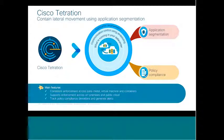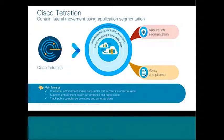Once policies are in place and enforced, Tetration continuously tracks for policy compliance. If any application components deviate from the policy, Tetration can identify those policy deviations in near real time and send alerts. These alerts can be integrated into customers' security incident and event management systems — Splunk, IBM QRadar, or other SIEM systems. Customers can take action proactively, and if it is a legitimate deviation, they can update the whitelist policy and enforce the updated whitelist, all using the Tetration platform.